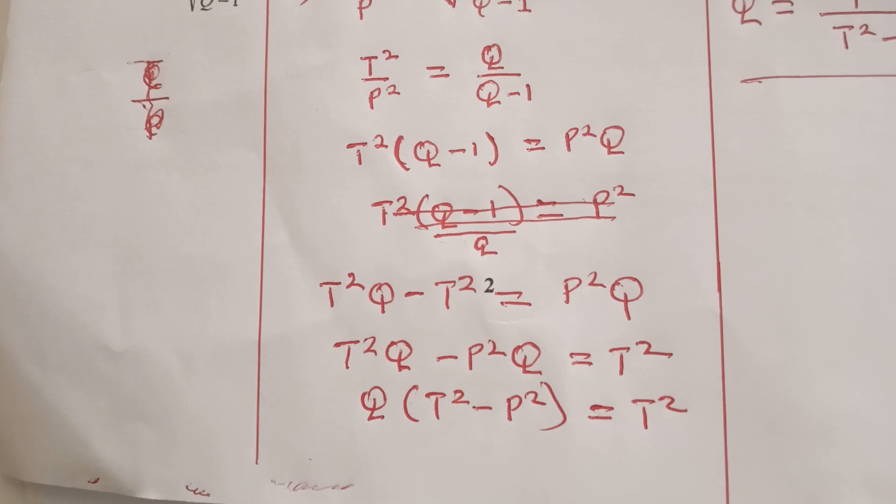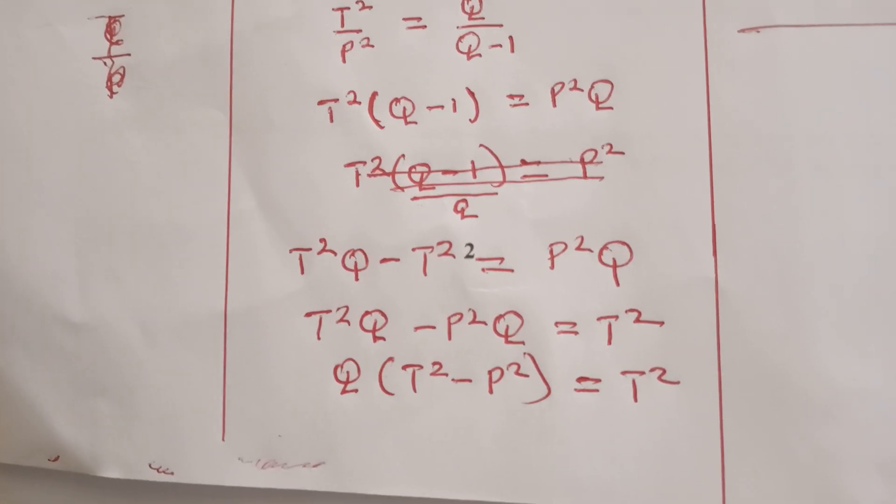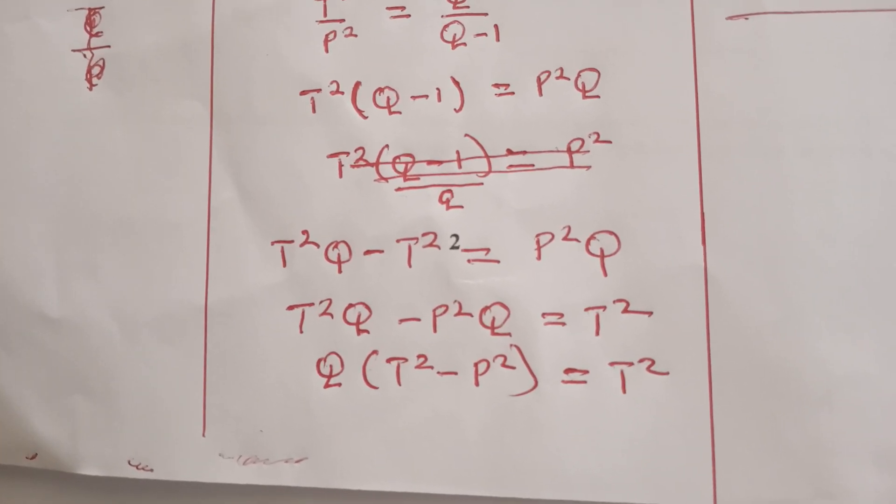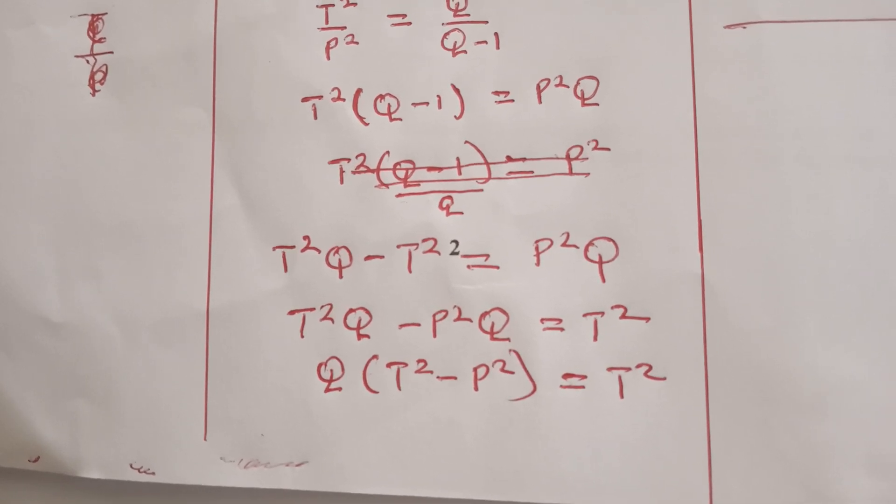Then we factorize out Q, we shall have Q into T squared minus P squared is equal to T squared.